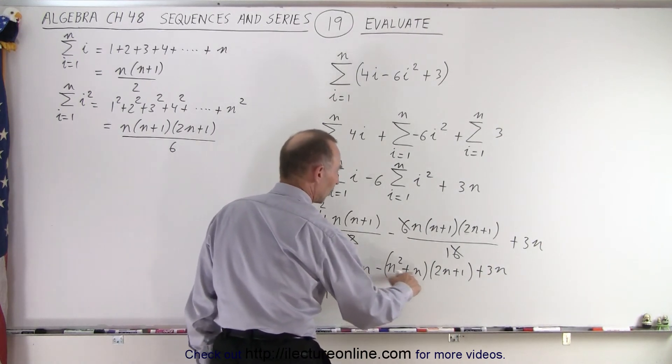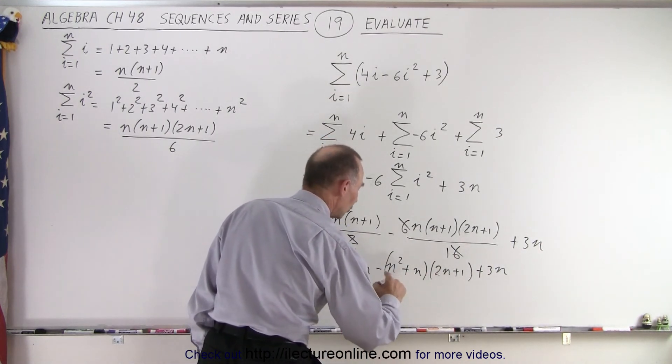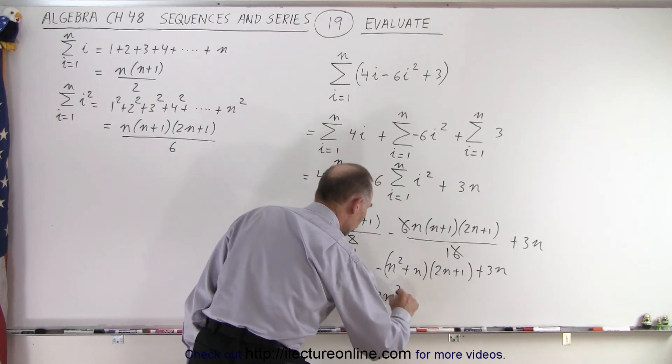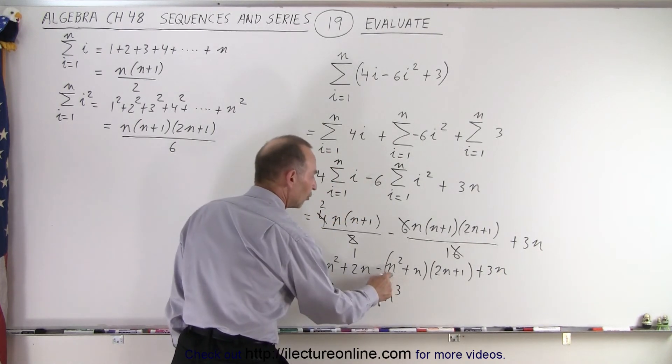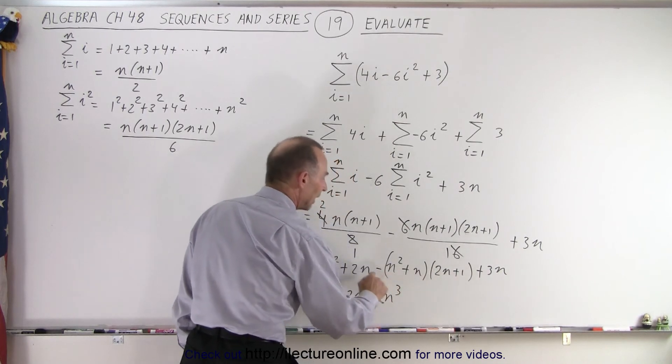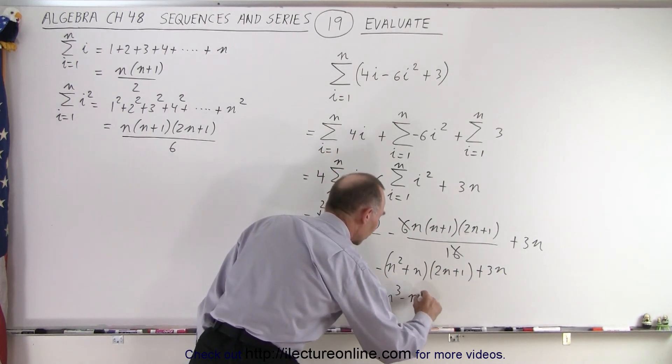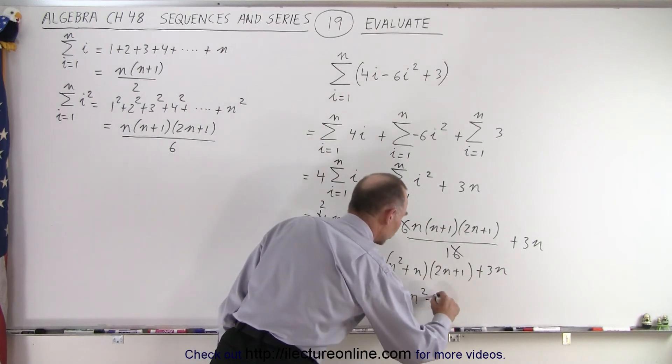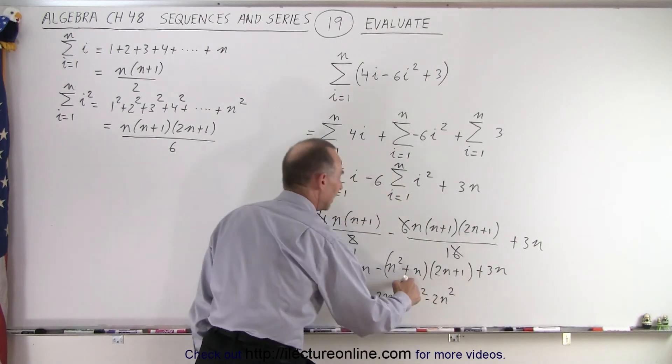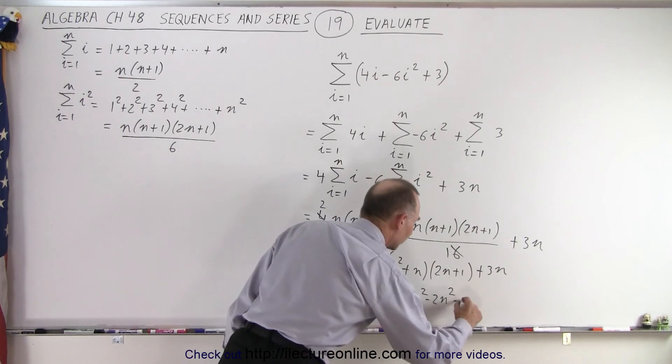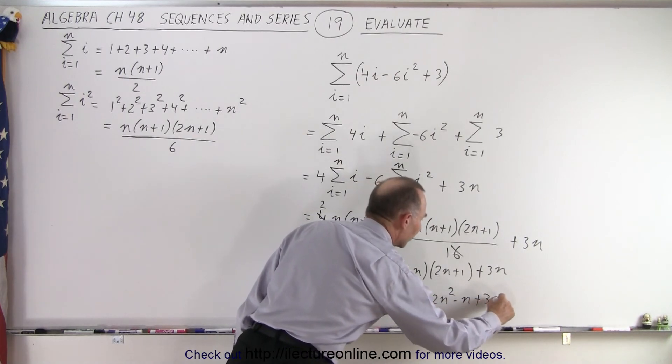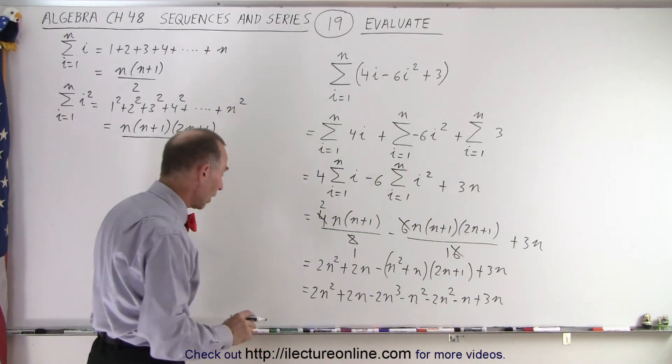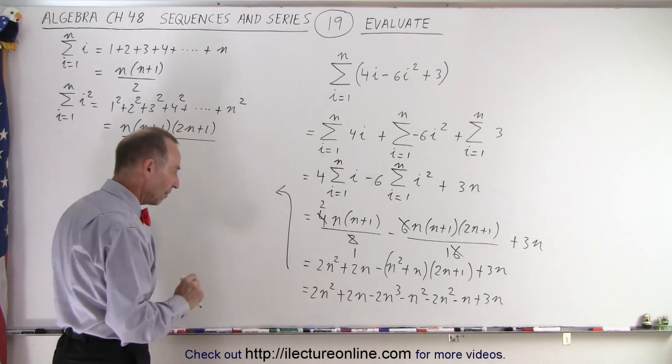So we have n squared times 2n that is 2n cubed, so minus 2n cubed. n squared times 1 with a negative, that's minus n squared. n times 2n with a negative, that would be minus 2n squared, and n times that with a negative would be minus n plus 3n. And now I'm ready to collect all the common terms.